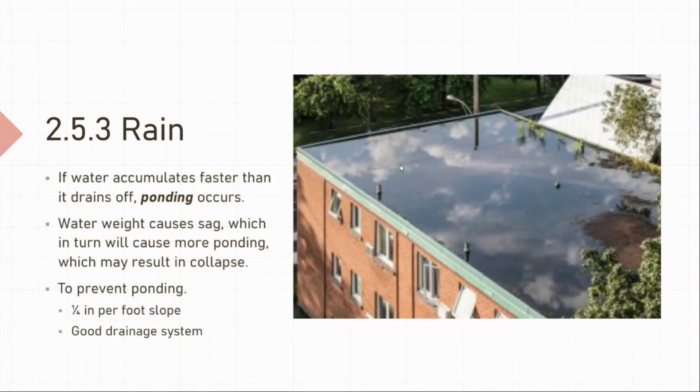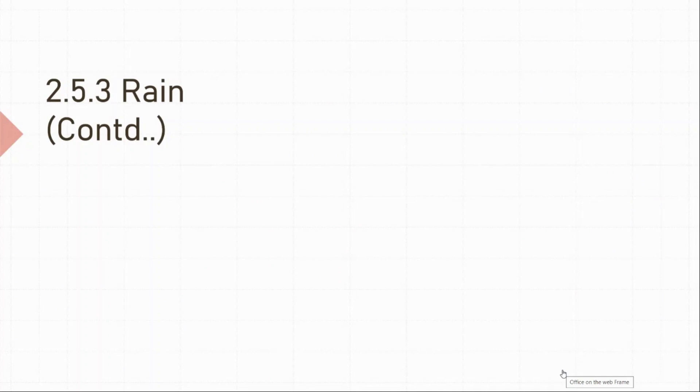Here you can see the image on your right. There is accumulation of water on the roof. This happens when water accumulates faster than it is getting drained off. This very phenomenon which you see in the image is called ponding. At times, in an event of a storm, the slope of the roof and drainage facilities are just not enough.